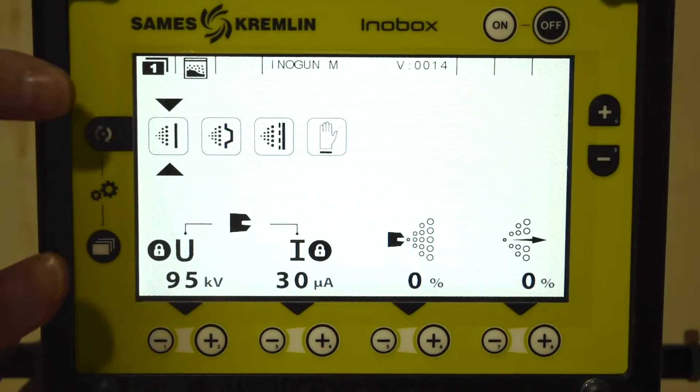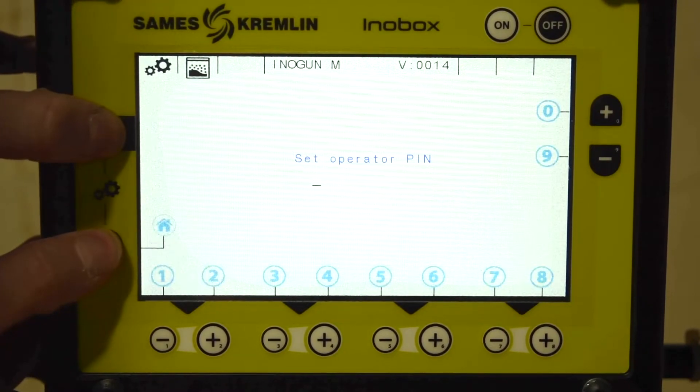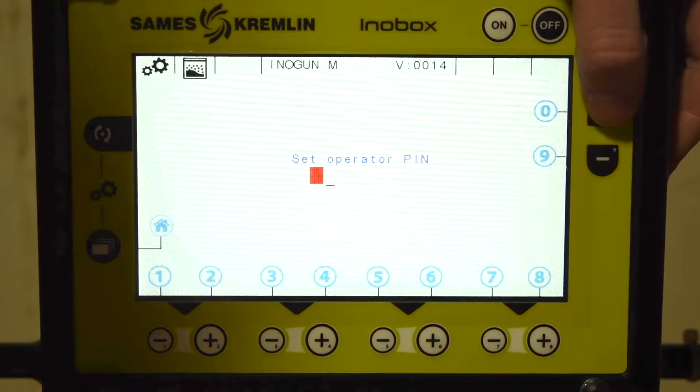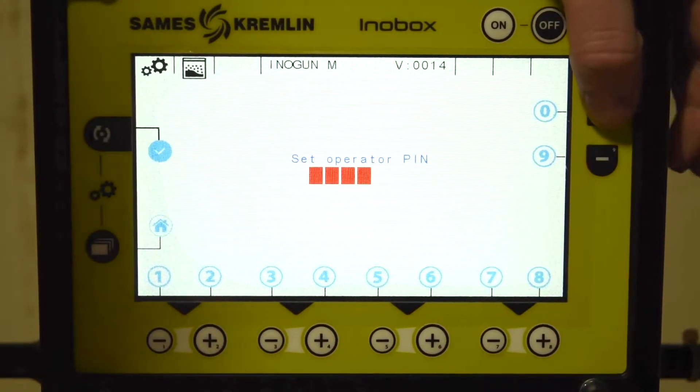Press the cycle and sub-menu keys simultaneously to access your operator settings. These settings are locked behind an operator PIN password.